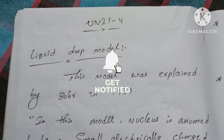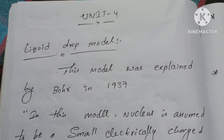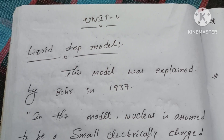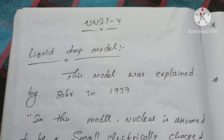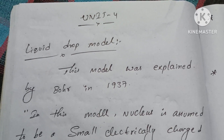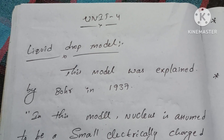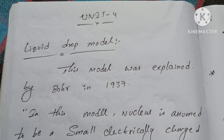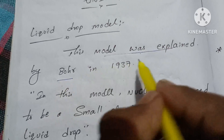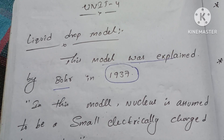In this video, we will talk about Unit 4. The most important question is the liquid drop model. It is very easy and very important. If you have two questions about liquid drop model and shell model, you will talk about liquid drop model. You have 10 marks, or 5 marks from Unit 4. This model was explained by Bohr in 1937.